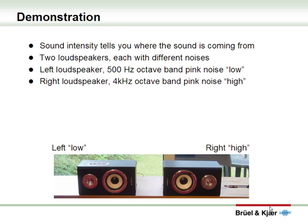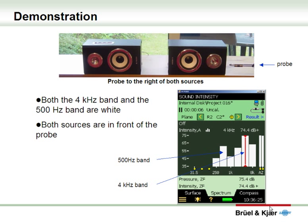Let's look at the demonstration measurement performed earlier. Sound intensity will tell you where the sound is coming from. In this demonstration there are two loudspeakers, a left and a right. The left loudspeaker gives a 500 Hz octave band pink noise, and the right gives a 4 kHz octave band pink noise. When played together they mingle, but come from two different sources. If we place the probe to the right of both loudspeakers, the sound from both speakers passes the probe in a positive direction, colored white on the instrument display — so both the 500 Hz band and the 4 kHz band are white, showing both sound sources are in front of the probe.